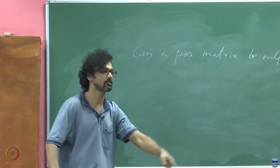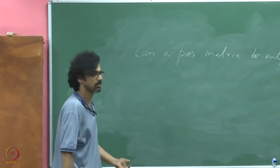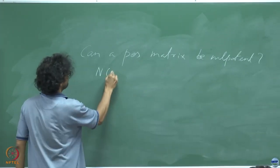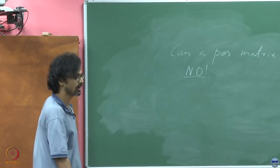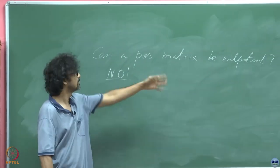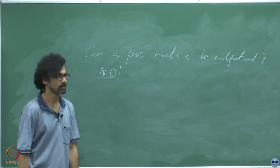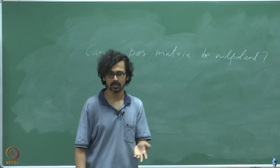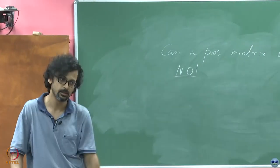What is the trace of a positive matrix? Positive, non-zero. So there you have it. The answer is an emphatic no. Of course not. There are several ways of arguing this, but one straightforward way is that a positive matrix can never be nilpotent. Your positive matrix definitely has at least one non-zero eigenvalue.